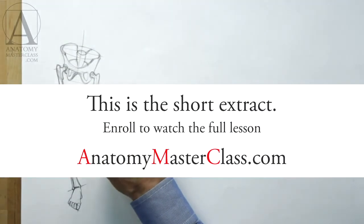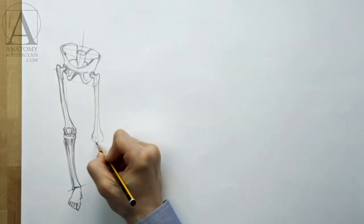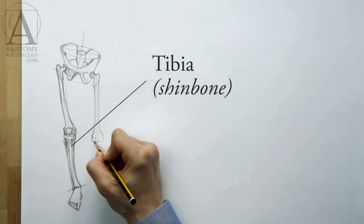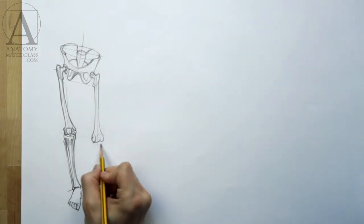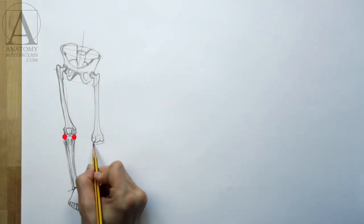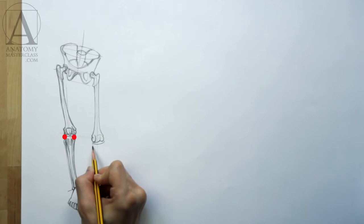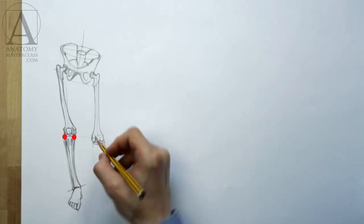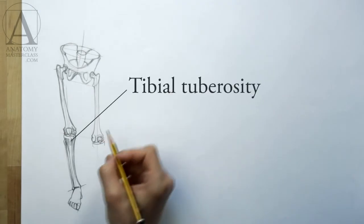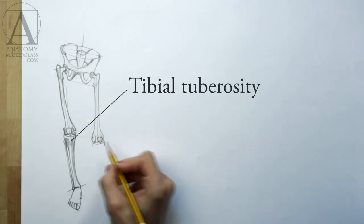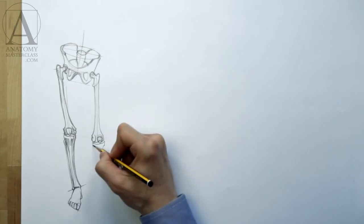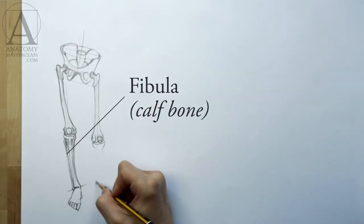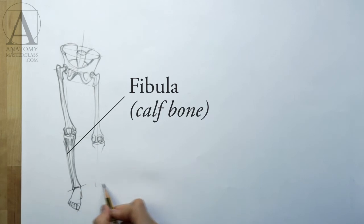The lower leg has two bones. The larger one is called the tibia, or the shin bone. This bone is also wider at the knee joint. The two bony projections of the tibia are also called the condyles. The tibial tuberosity is located beneath the kneecap. On the outer side of the tibia, there is the bone called the fibula, or the calf bone.